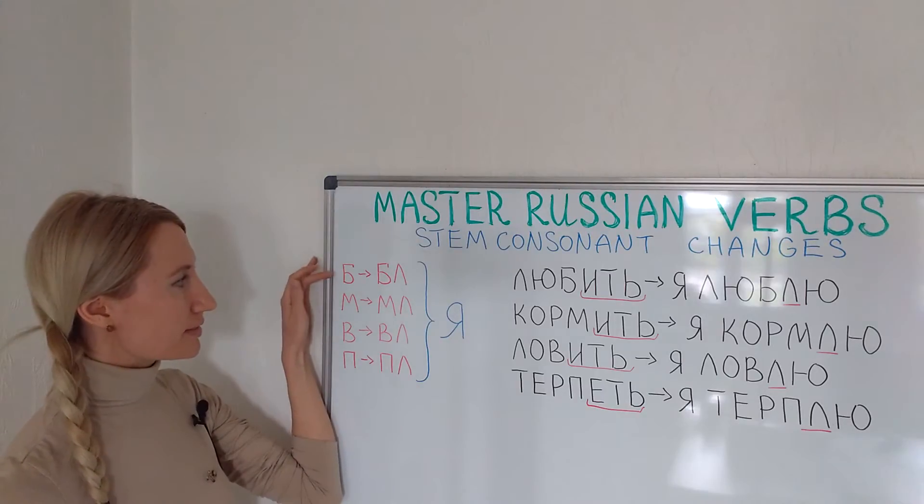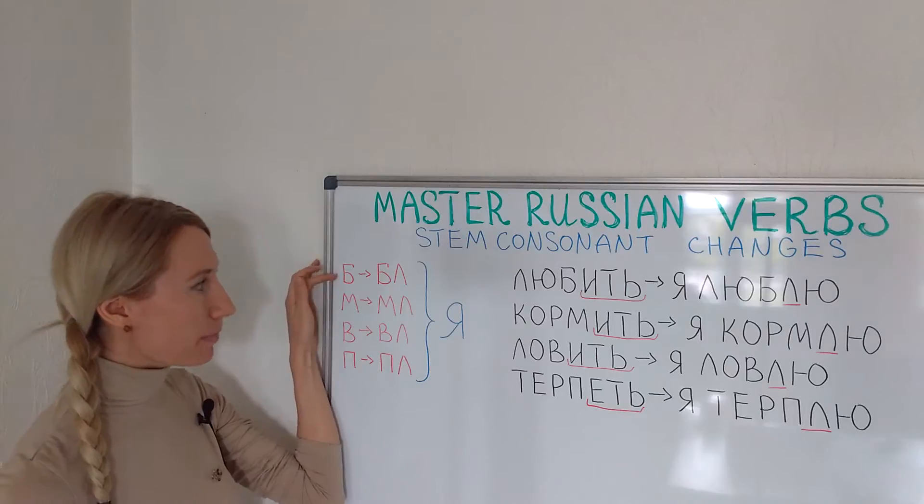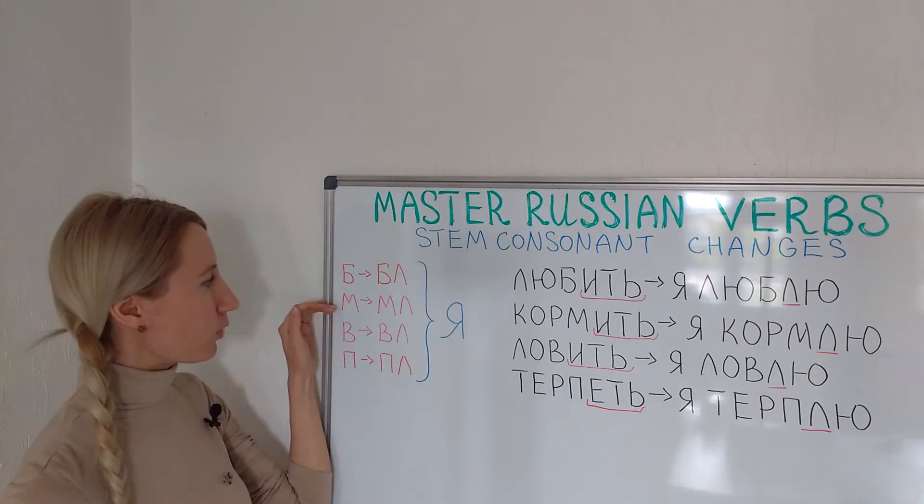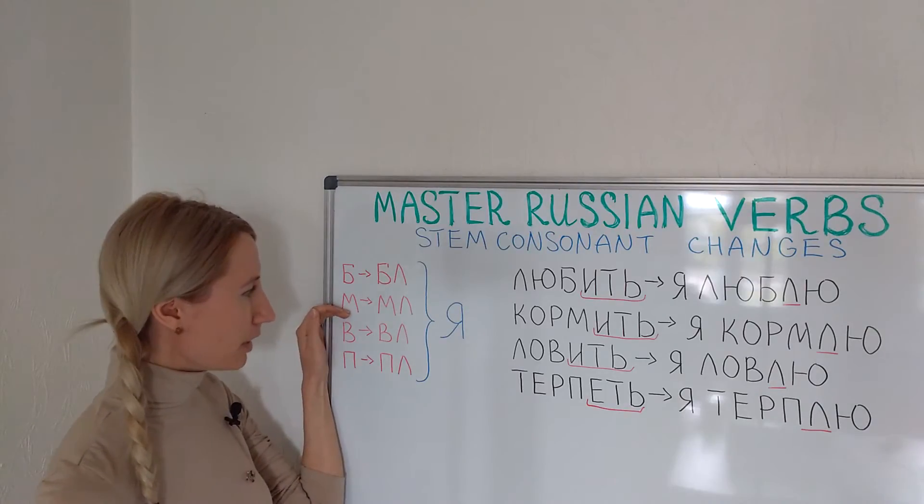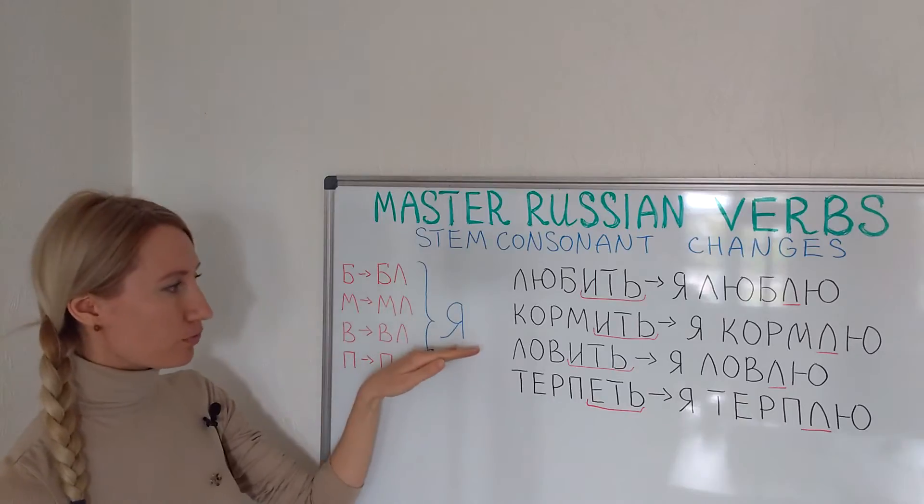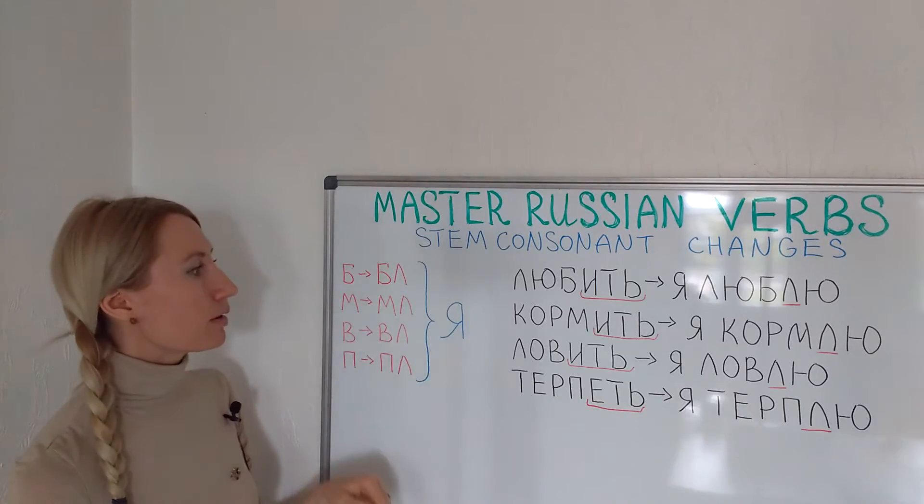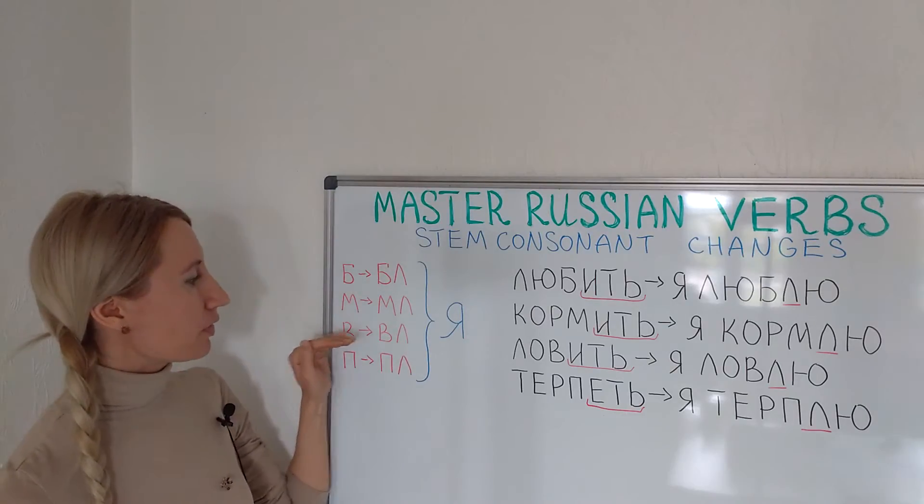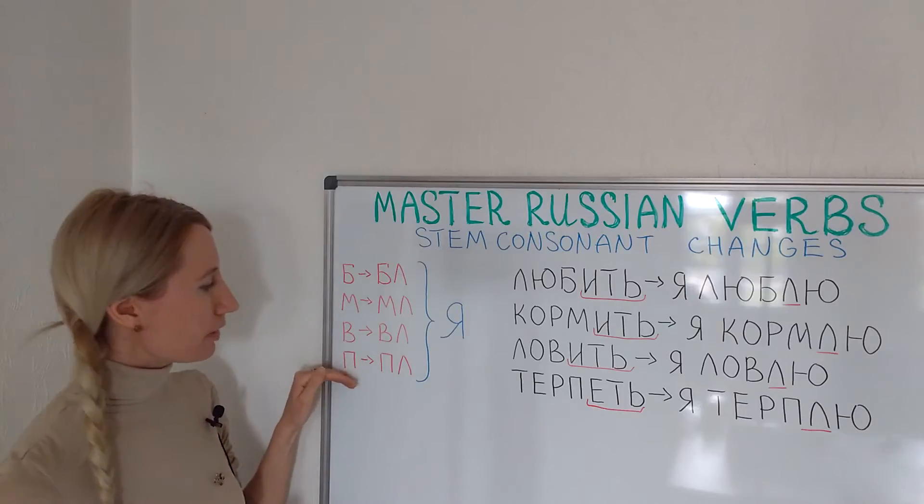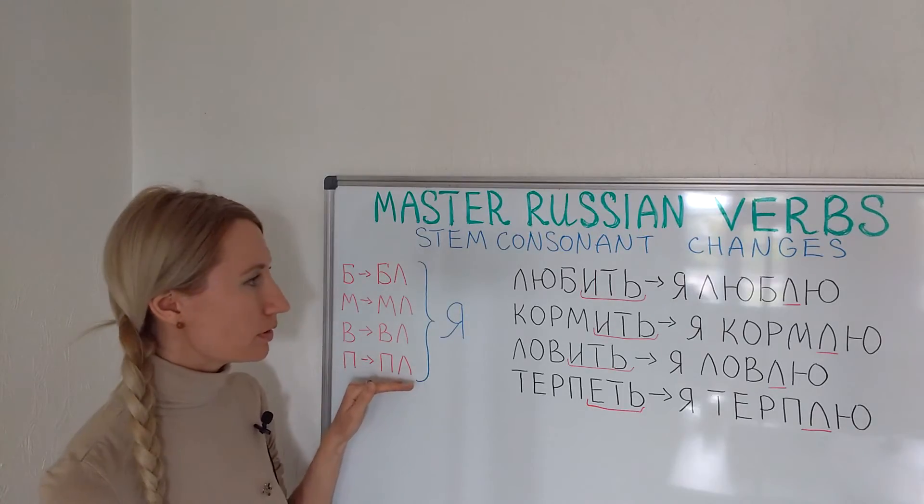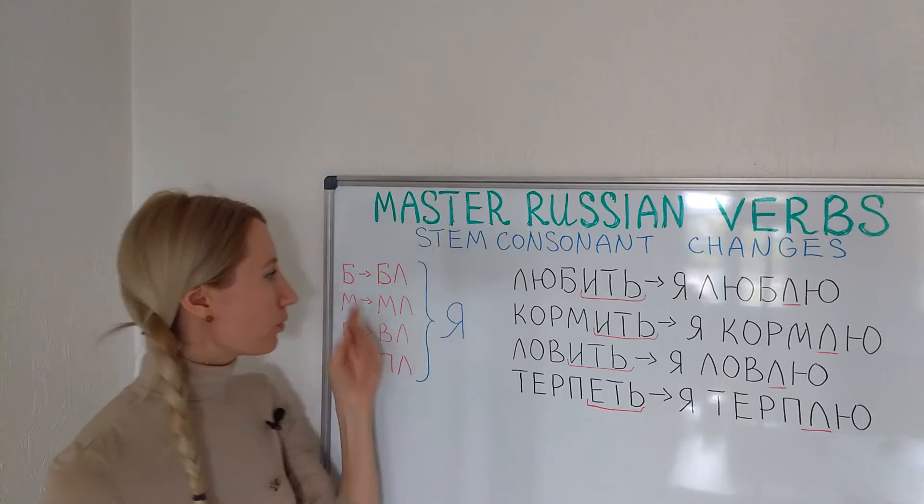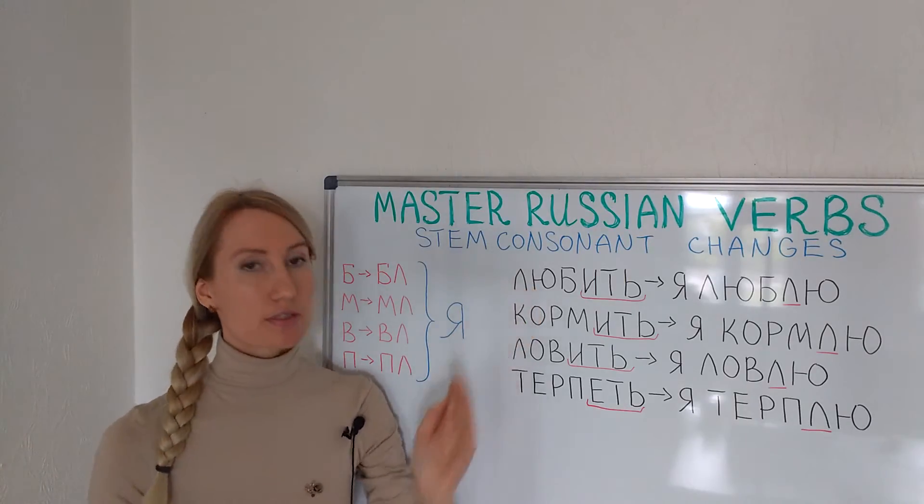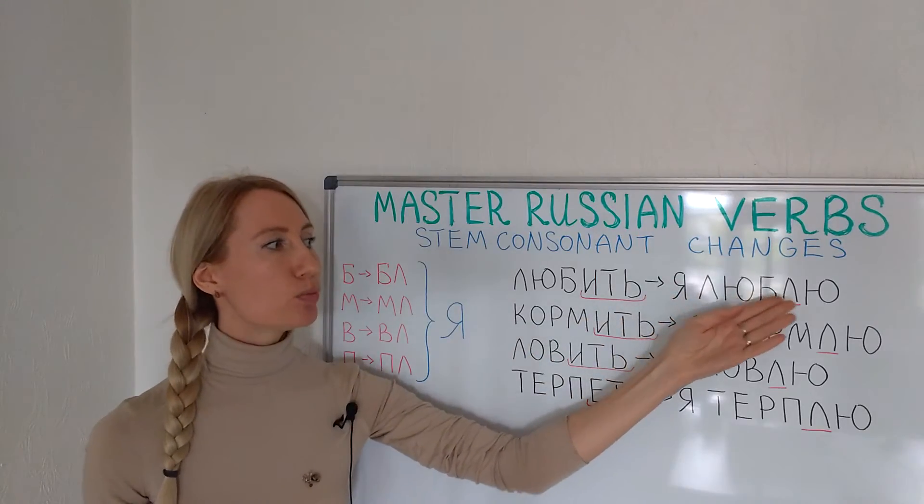You may remember it like this: when the stem ends with Б, for the first person БЛ will appear. When the stem ends with М, МЛ will appear for the first person, but not for us, just for я. В will transform into ВЛ and П will transform into ПЛ. Let's look at four examples with all these transformations.